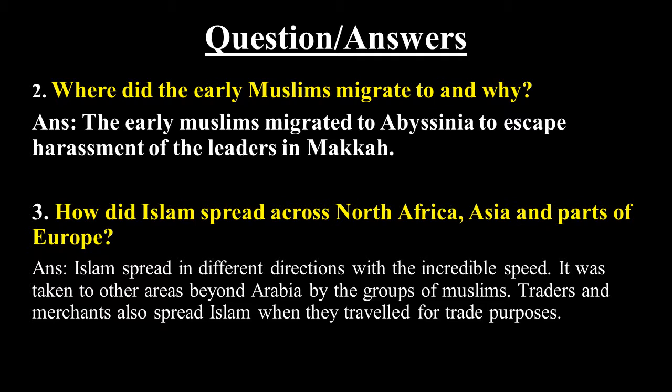Question number 3: how did Islam spread across North Africa, Asia, and parts of Europe? Basically, Islam spread across different directions with incredible speed — in Africa, Asia, and Europe. This happened largely through traders and merchants who had accepted Islam. They came to trade and do business, and through that, people joined Islam. So Islam spread very quickly and with incredible speed in different directions across Europe, Africa, and Asia.